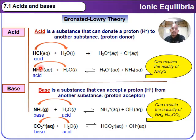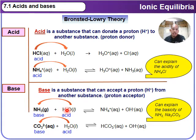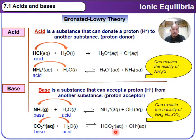According to Brønsted-Lowry theory, a base is a substance that can accept a proton, H⁺, from another substance — we call it a proton acceptor. For example, ammonia, NH₃, is called a base because H₂O donates a proton and NH₃ accepts H⁺ to form NH₄⁺(aq) and OH⁻(aq). Another example: the carbonate ion, CO₃²⁻, accepts a proton from H₂O to form HCO₃⁻(aq) and OH⁻(aq), explaining the basicity of ammonia and sodium carbonate.